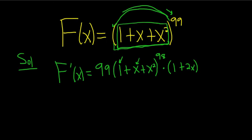So again, we take the 99, put it in the front, don't touch the inside, subtract 1 so it gives you 98, and then you multiply by the derivative of the inside.